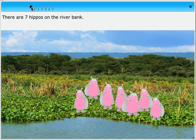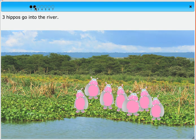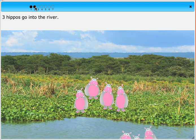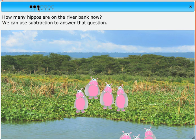There are seven hippos on the riverbank. Three hippos go into the river. How many hippos are on the riverbank now? We can use subtraction to answer that question.